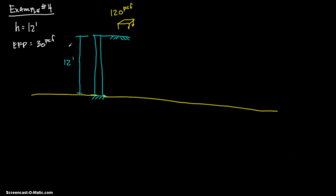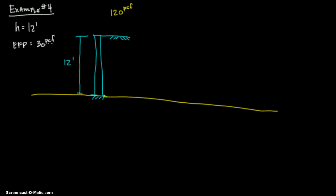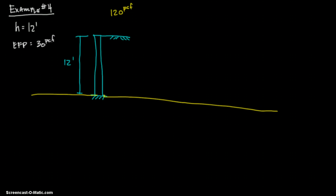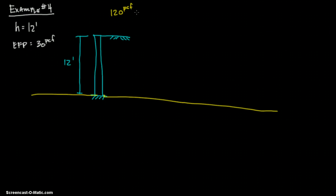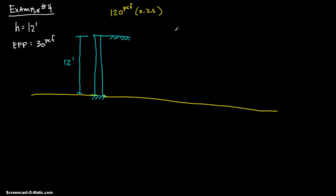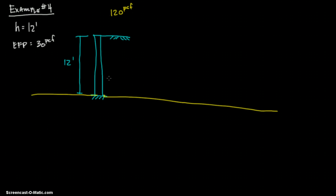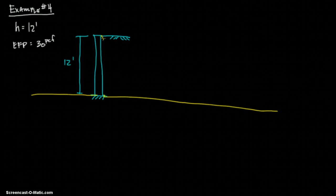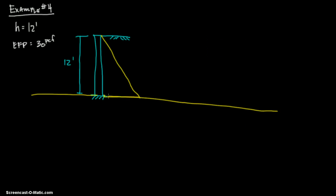This 30 PCF means that out of this 120 pounds, it's saying that a quarter of it you're going to see horizontal. So you have 120 pounds vertical, a quarter of that is going to be horizontal, which turns out with a k, and that's all I'm going to say for right now because there's different types of k, but a k of a coefficient of 0.25. So if you say 120 times 0.25, you get 30 PCF. It's the horizontal projection of this vertical load.